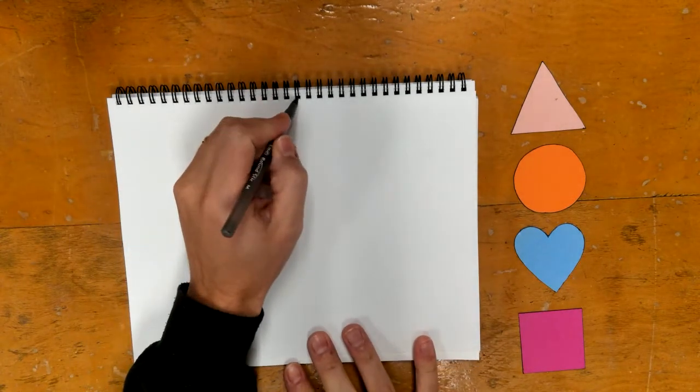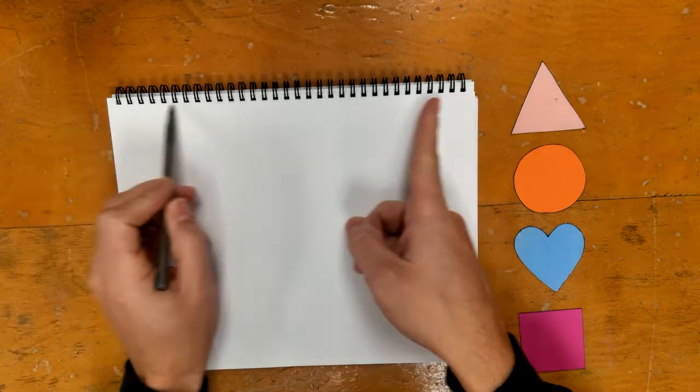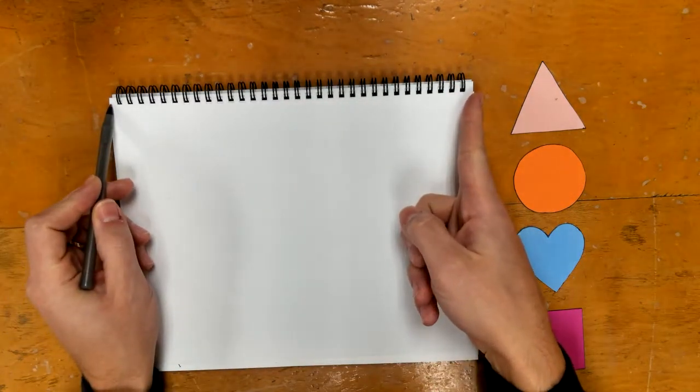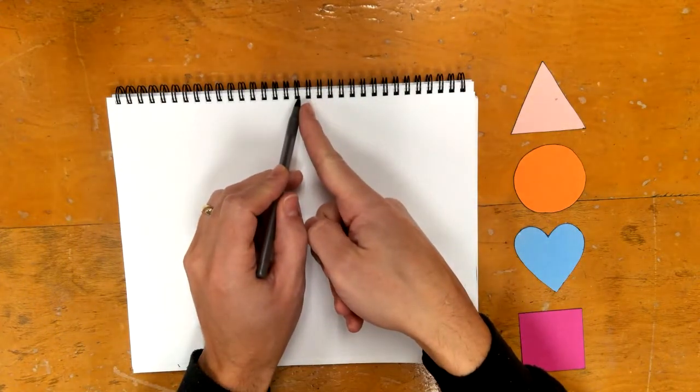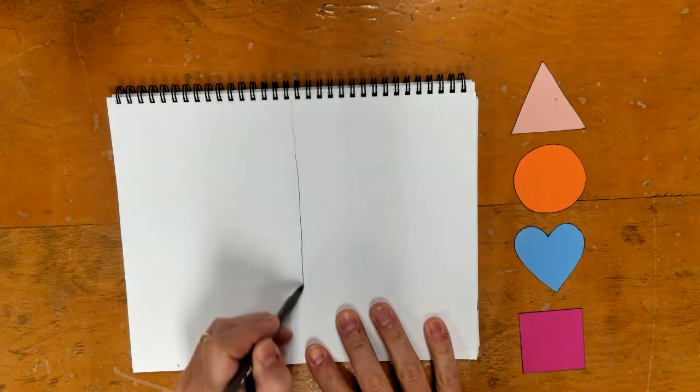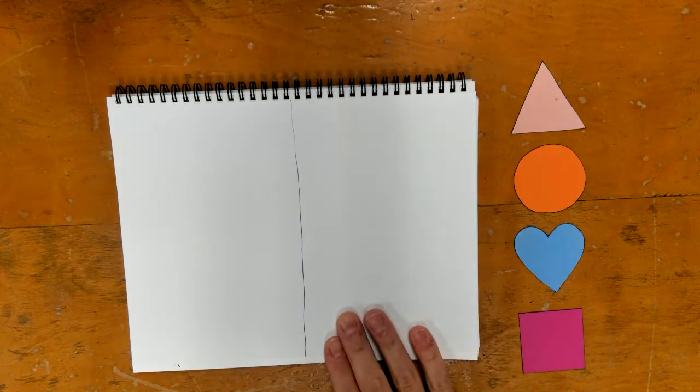And the first thing I'm going to do is try to find the center. So halfway from this side to this side and find where I think the center is. Then I'm going to draw a straight line down.